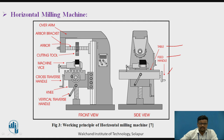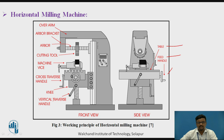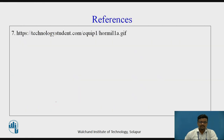The arbor is a hollow component on which the milling cutter is mounted. There is also the machine vice, which is the job holding device in the milling machine. There is a cross traverse handle — if you want to provide feed to the machine vice or work piece, you use the cross traverse handle. The knee allows movement in the upward or downward direction. There is also a vertical traverse handle, which allows movement in the horizontal or vertical direction to the work piece. These are the main components of the horizontal milling machine.